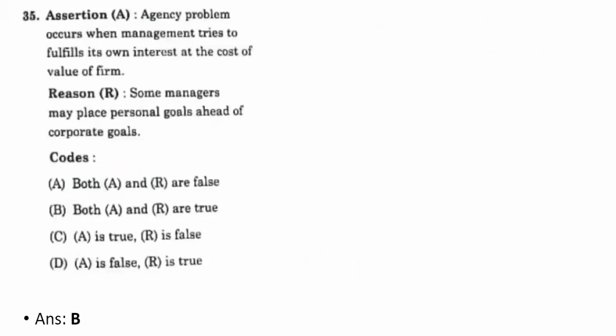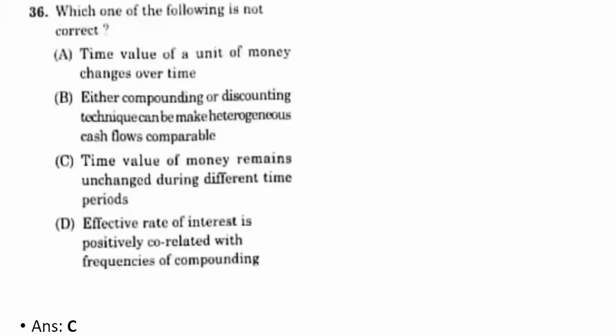Thirty-fifth question — assertion and reasoning: agency problem occurs when management tries to fulfill its own interest at the cost of the value of the firm. The reason is some managers may place personal goals ahead of corporate goals. Both A and R are true. Thirty-sixth question: which one of the following is not correct? The correct option is C — time value of money remains unchanged during different time periods — this is wrong because TVM does undergo a change.